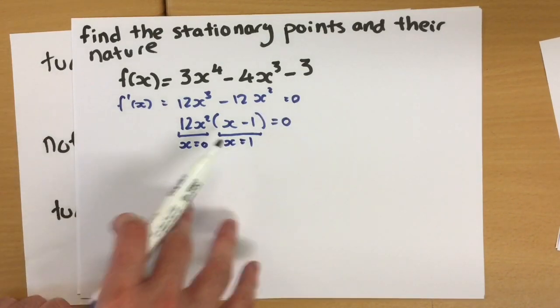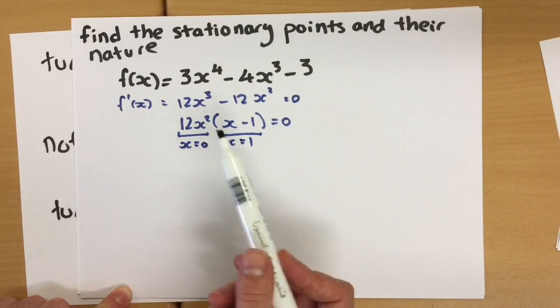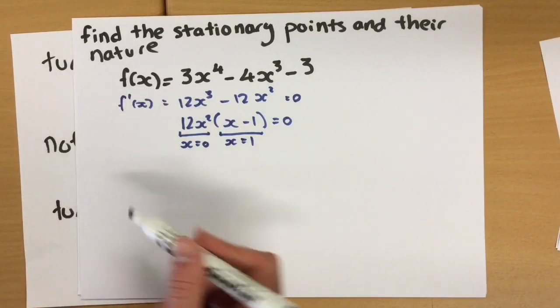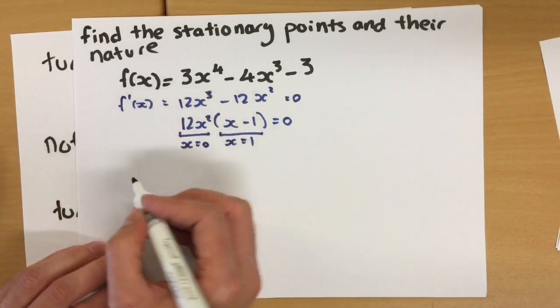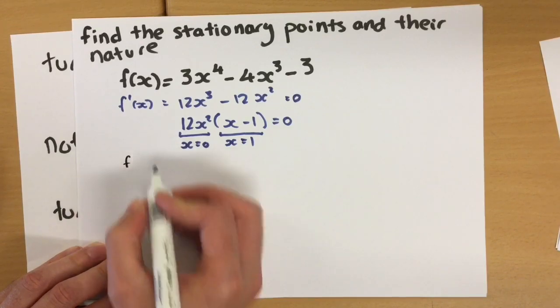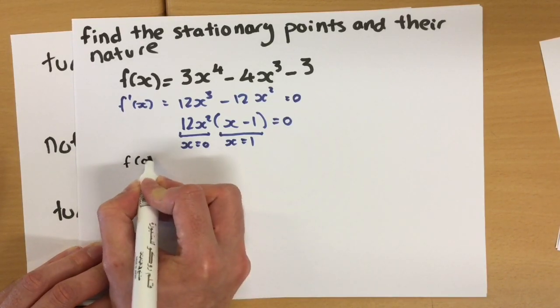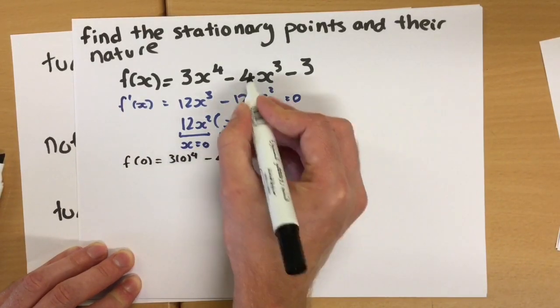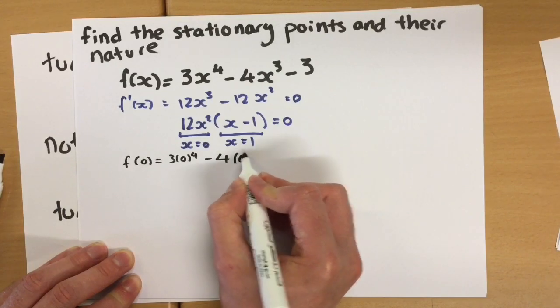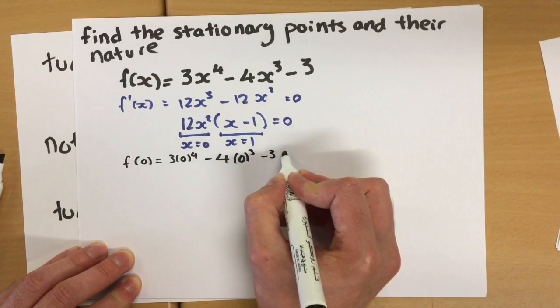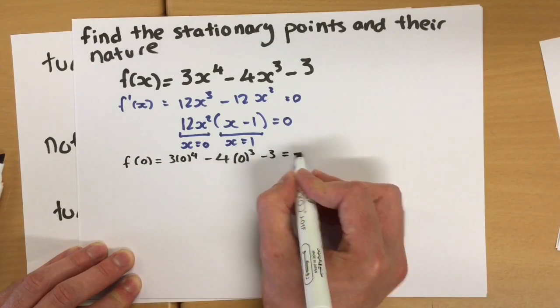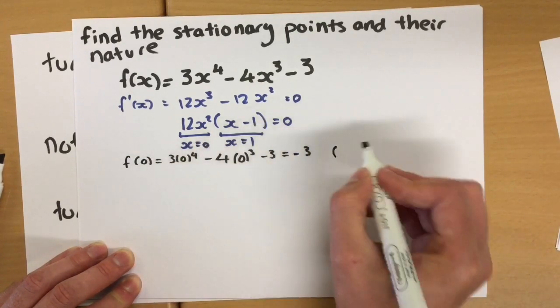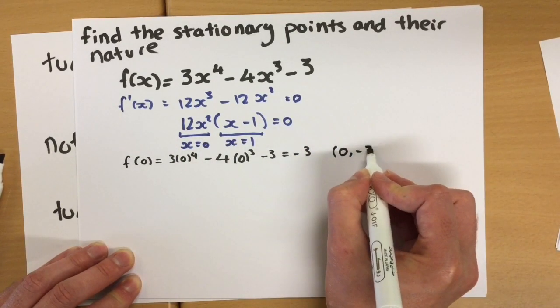So let's find out the coordinates for these two points. So remember, our first function talks about a single point, it gives us the coordinates. So we take our first function, and we substitute in zero first of all. We get 3 times 0 to the power of 4, subtract 4 times 0 cubed, take away 3, which gives us nothing, nothing, negative 3. So our first stationary point is that x value is 0, y value negative 3.